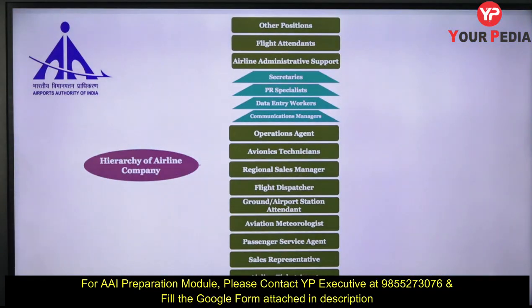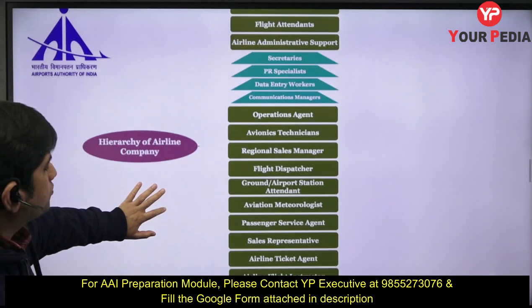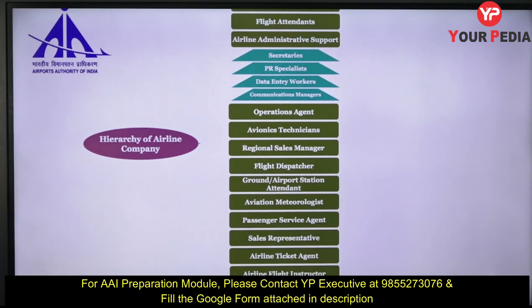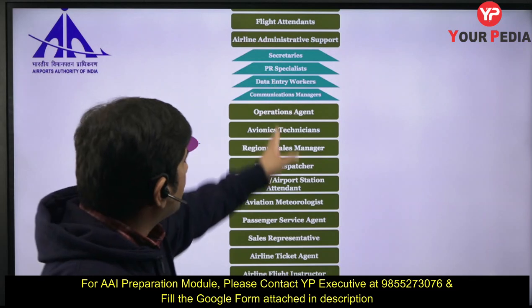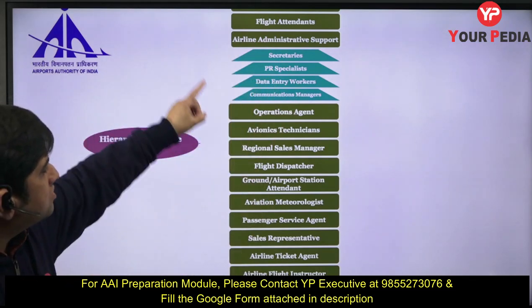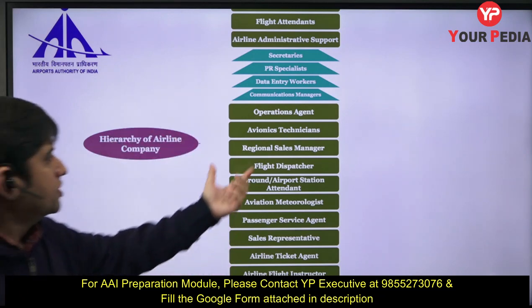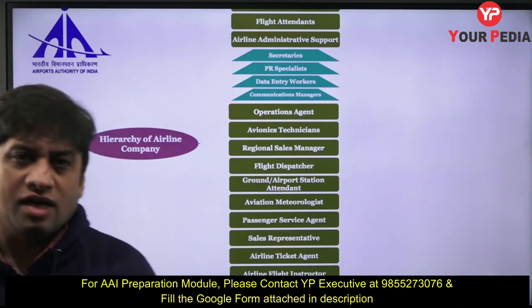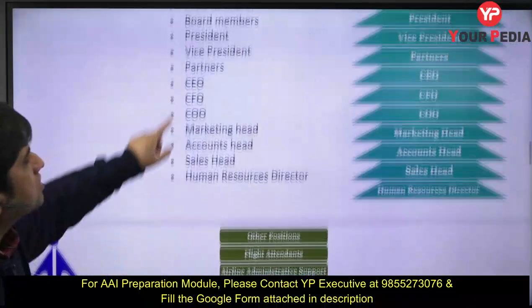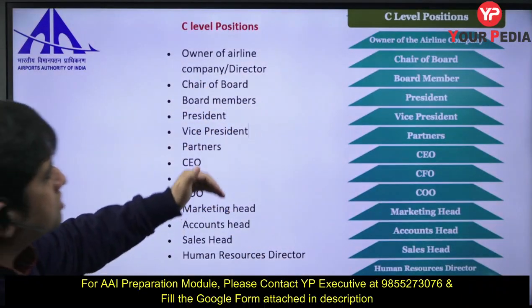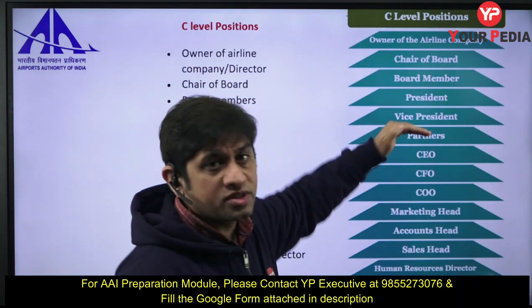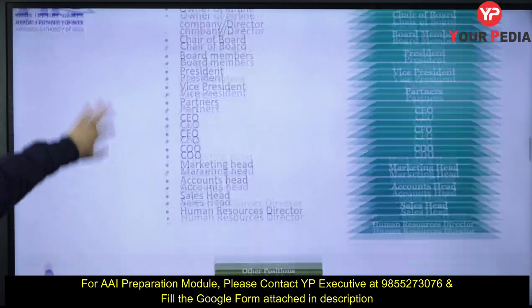Going below the C-level, there are other positions as well. These include flight attendants, air administrative support, secretaries, specialists, hotel data entry workers, operations agents, avionic technicians, and so on. Pilots and co-pilots also come under the hierarchy. This is not strictly a single vertical hierarchy — there are horizontal and vertical components, which form a matrix structure.